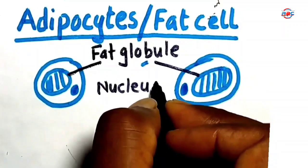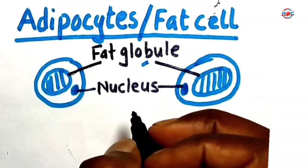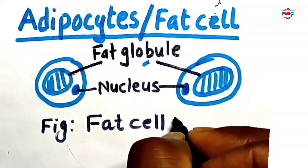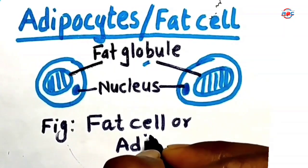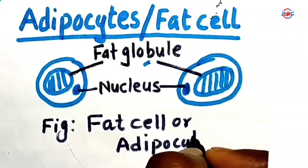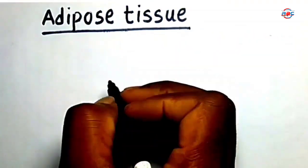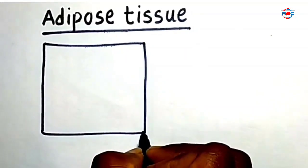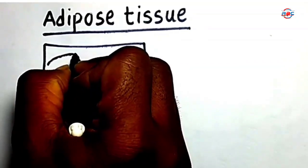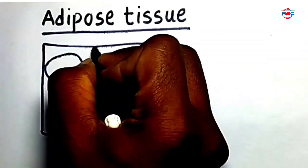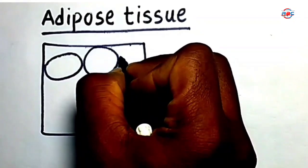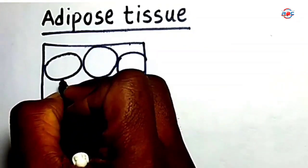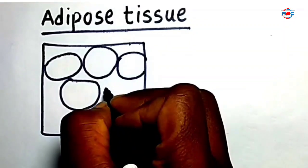Nucleus. Finally, write down the name of the figure: fat cells or adipose cells. The adipose tissue is a group of fat cells or adipose cells. Draw the many rounded or oval shaped cells with a peripheral nucleus and central fat globules.